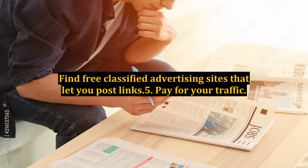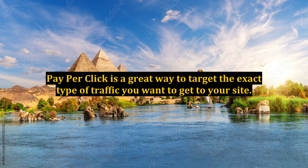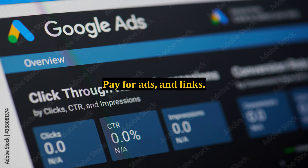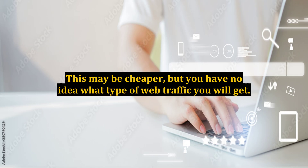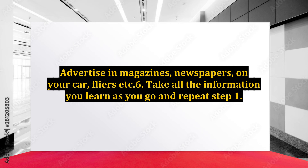Having links out there on the web will help drive in traffic even if the search engines are placing you low in search results. Find free classified advertising sites that let you post links. Step 5: Pay for your traffic. Pay per click is a great way to target the exact type of traffic you want to get to your site. Pay for ads and links — this may be cheaper, but you have no idea what type of web traffic you will get. Advertise in magazines, newspapers, on your car, flyers, etc.